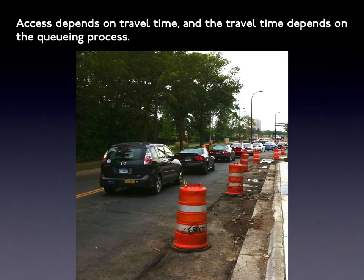Chapter 5: Queuing. Access depends on travel time, and the travel time depends on the queuing process. In simple terms, we are either traveling unaffected by the movement of others, which engineers call free-flow, or we are slowed by others, which we call queuing — either directly, due to interactions such as congestion, or indirectly, because of controls to manage those interactions, like traffic signals.